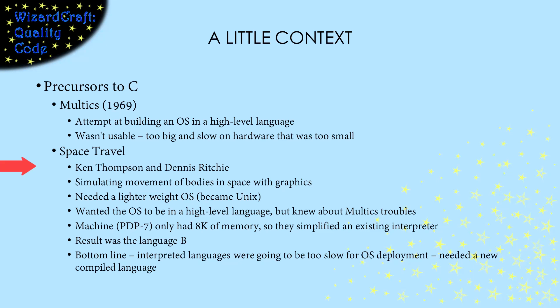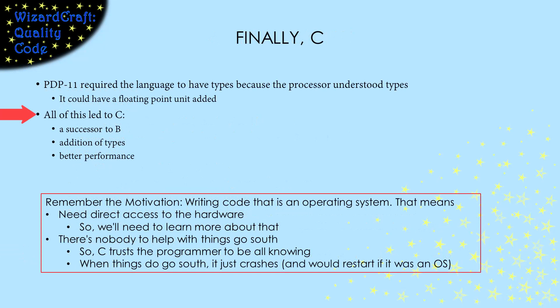Ken Thompson and Dennis Ritchie were working on simulating the movement of bodies in space with graphics. In order for that to run on the equipment of that time period, they needed a much lighter weight operating system than what they had. They wanted to build it in a high-level language, but they knew about the trouble that Multics had. So they simplified an existing interpreter to create the language B. But that still wasn't fast enough — interpreting the language was too slow, so they needed a compiled language. The result was C.